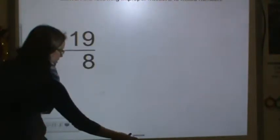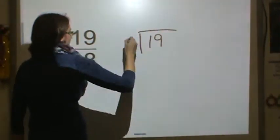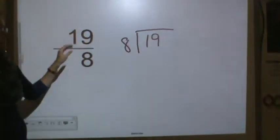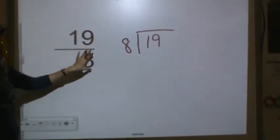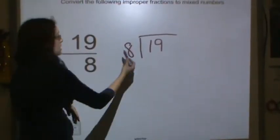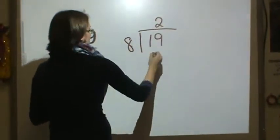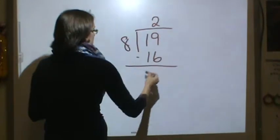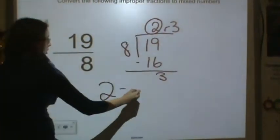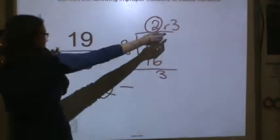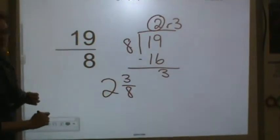Let's look at this one. 19 divided by 8. Because I have 19 pieces divided into groups of 8. Because that's the size of my whole. My whole is divided into 8. So how many 8s are in 19? 2. Multiply. 16. Subtract. You have a remainder of 3. The 2 becomes the whole number. My remainder 3 becomes the new numerator. And my denominator is 8.